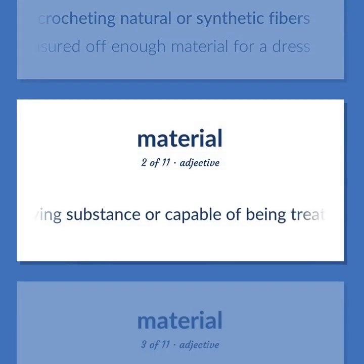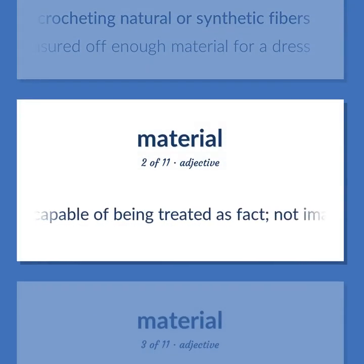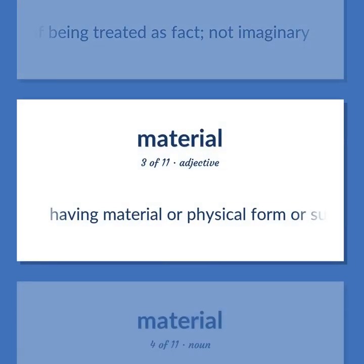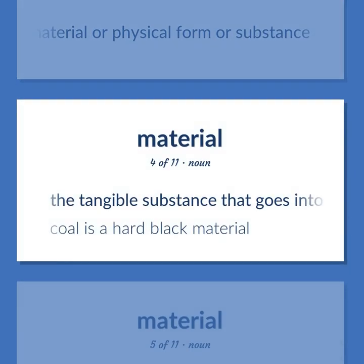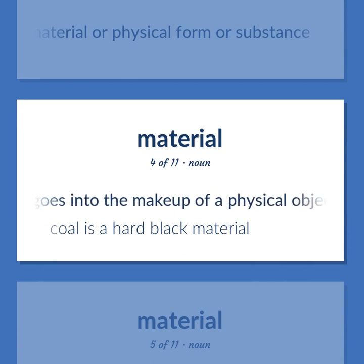Material (adjective): Having substance or capable of being treated as fact; not imaginary. Having material or physical form or substance. Material (noun): The tangible substance that goes into the makeup of a physical object. Example: Coal is a hard black material.